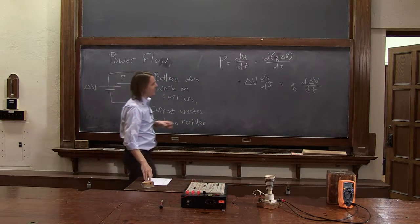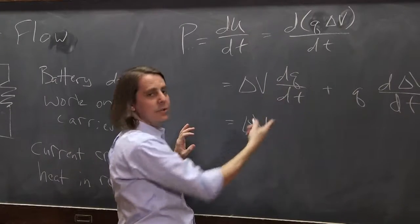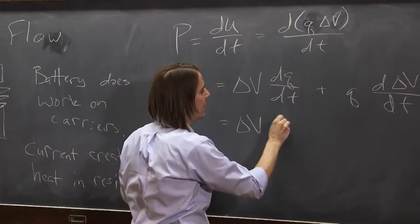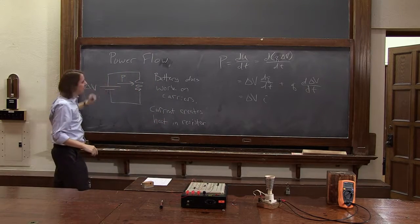And this is a derivative of a product of two things, so you apply the product rule. That's going to be delta v times dq dt plus q times d delta v dt. So you can look at those and say, what is this? Well, this is delta v and dq dt is the current, so that's delta v times i, if you think about what's happening to individual ones.